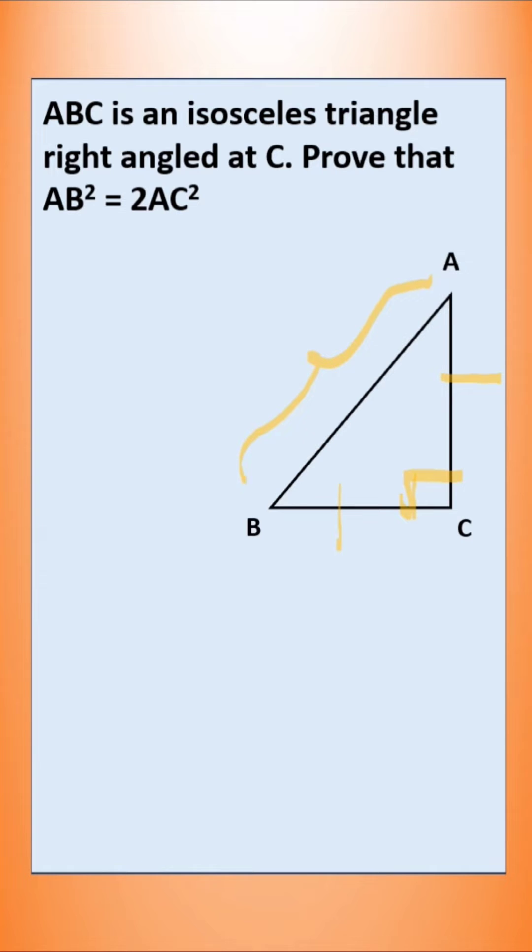From Pythagoras theorem, we know that the sum of squares on these two sides equals the square on the hypotenuse. Now, what is given? In triangle ABC, angle C is 90 degrees, and AC is equal to BC.